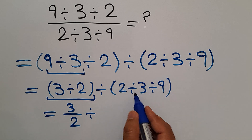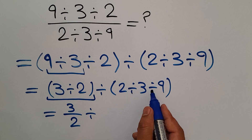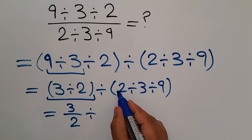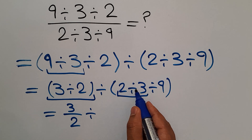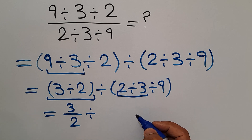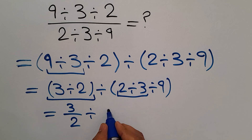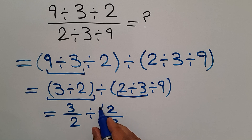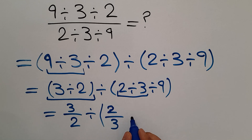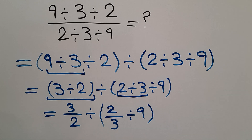Inside the second parentheses, we have two divisions. First, we evaluate 2 divided by 3, which can be written as 2 over 3. So we have 2 over 3 divided by 9.